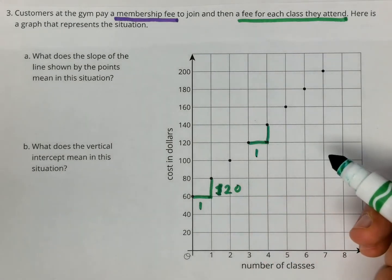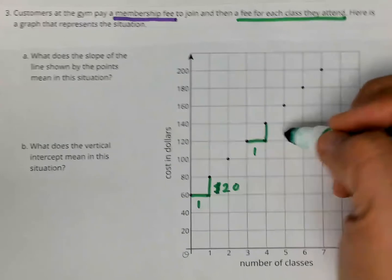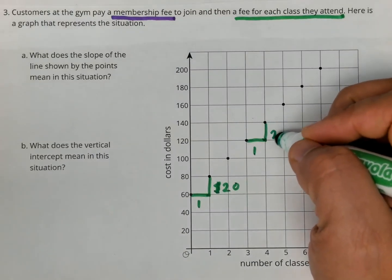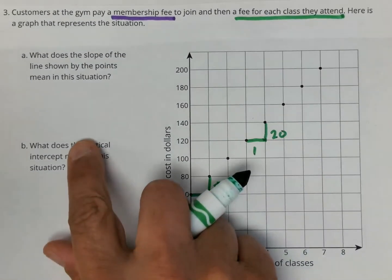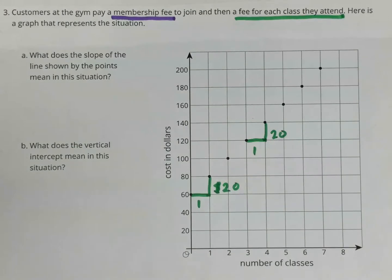Again, one class increases the cost by $20. Every time you add a class, you are adding $20. That is what the slope is here in this problem. Every time you take one class or you add a class, you add $20.